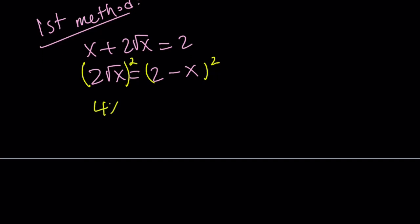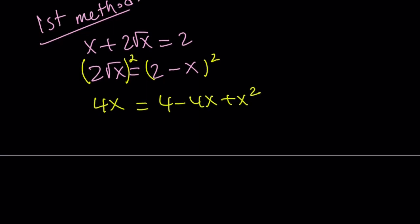Here, this gives us 4x equals 2 minus x quantity squared, which can be written as 4 minus 4x plus x squared. Unfortunately, the 4x doesn't cancel out. Let's go ahead and put everything on the right-hand side and then put that on the left-hand side. So in other words, subtract 4x. That gives us x squared minus 8x plus 4 equals 0.